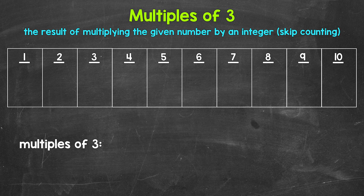So looking at the multiples of 3, let's start with 1 times 3. That gives us 3. 3 is the first multiple of 3. Then we have 2 times 3, that's 6. 6 is the second multiple of 3.